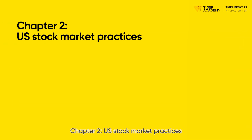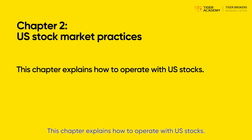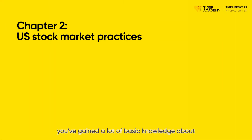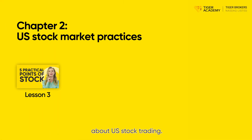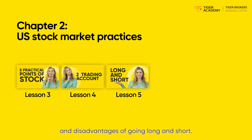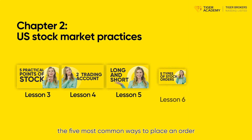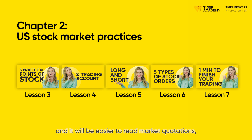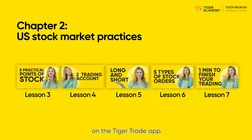Chapter 2: U.S. Stock Market Practices. This chapter explains how to operate with U.S. stocks. Through the practical instruction of the Tiger Trade app, you've gained a lot of basic knowledge about U.S. stock trading. You now know how to open a margin account and understand the advantages and disadvantages of going long and short. At the same time, the five most common ways to place an order will not be difficult for you, and it will be easier to read market quotations, conduct trades, read hotspots, and check announcements on the Tiger Trade app.